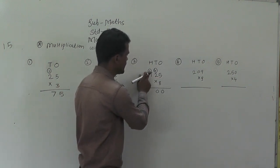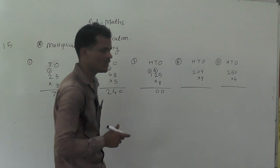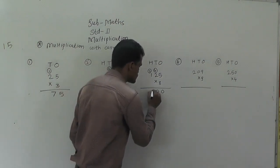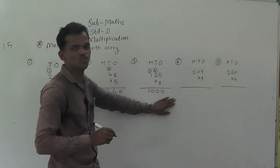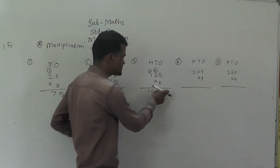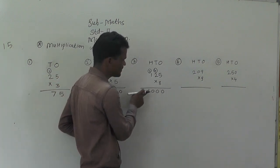Now, 8 times 1 is 8, 8 plus 2 equals 10. So write 10 like this. Read this number: ones, tens, hundreds, thousands.